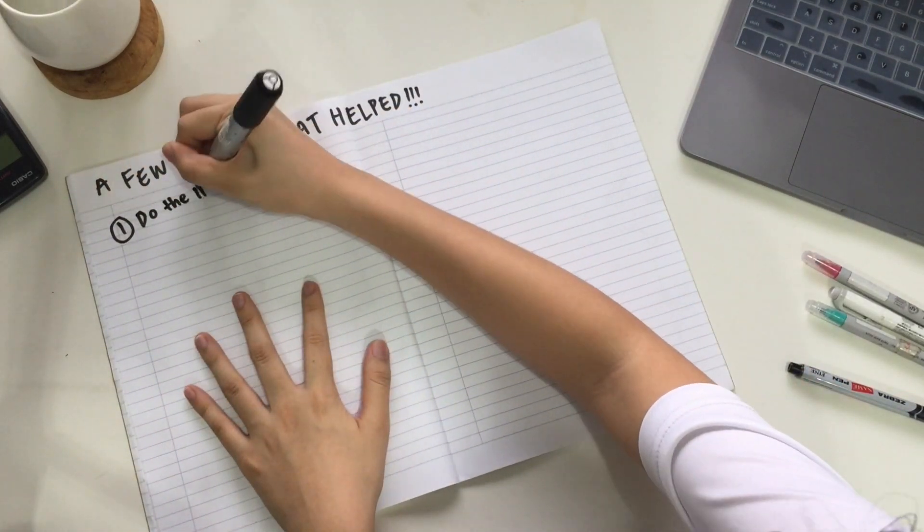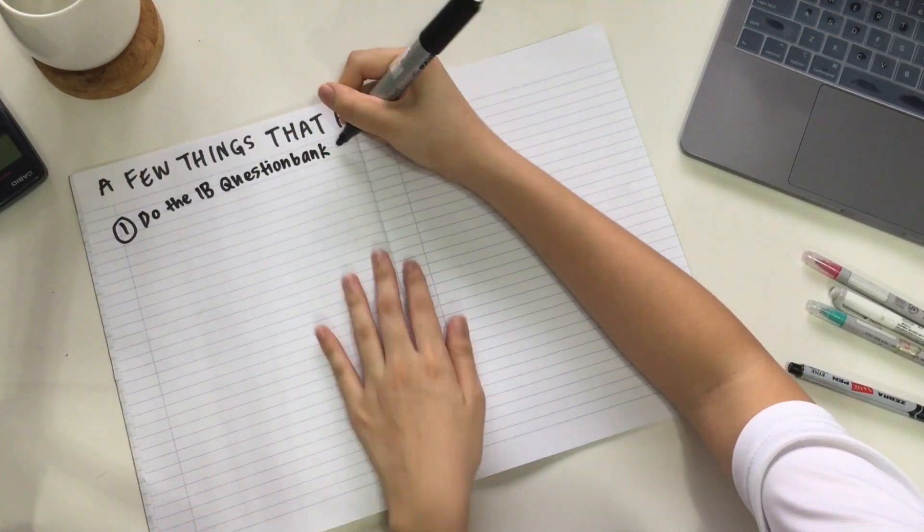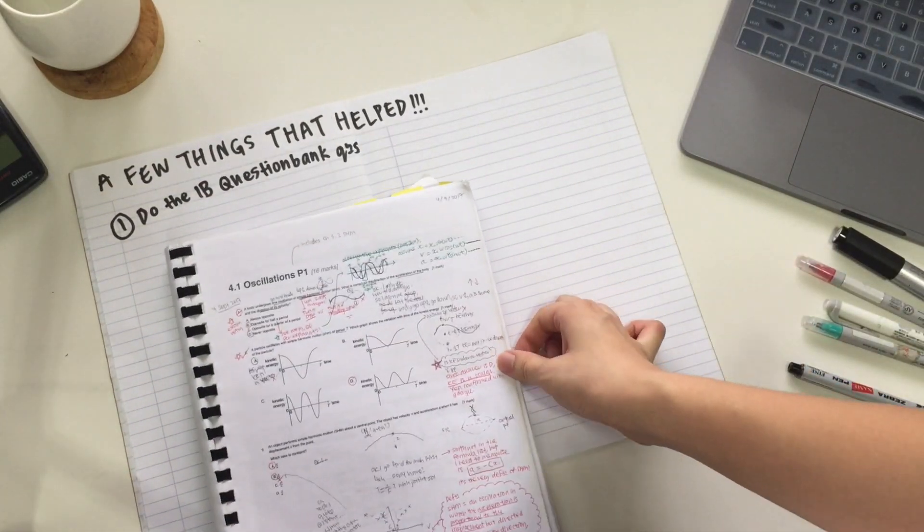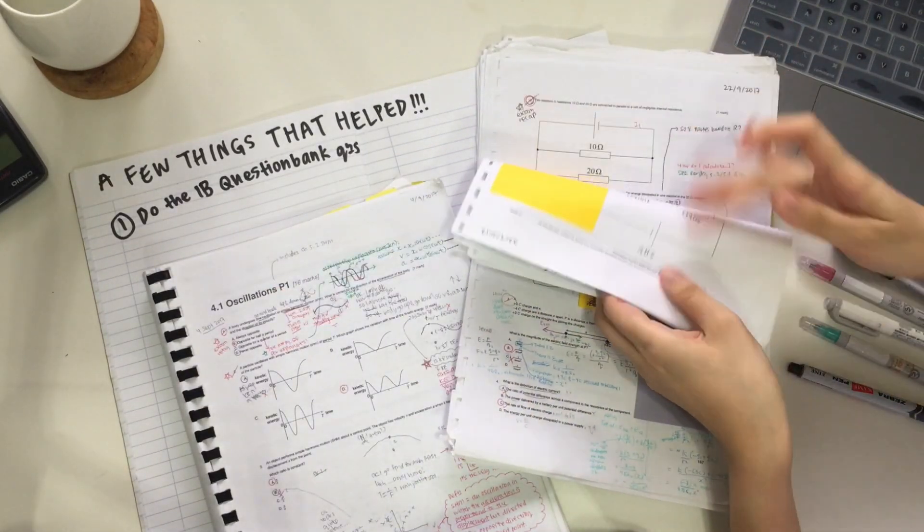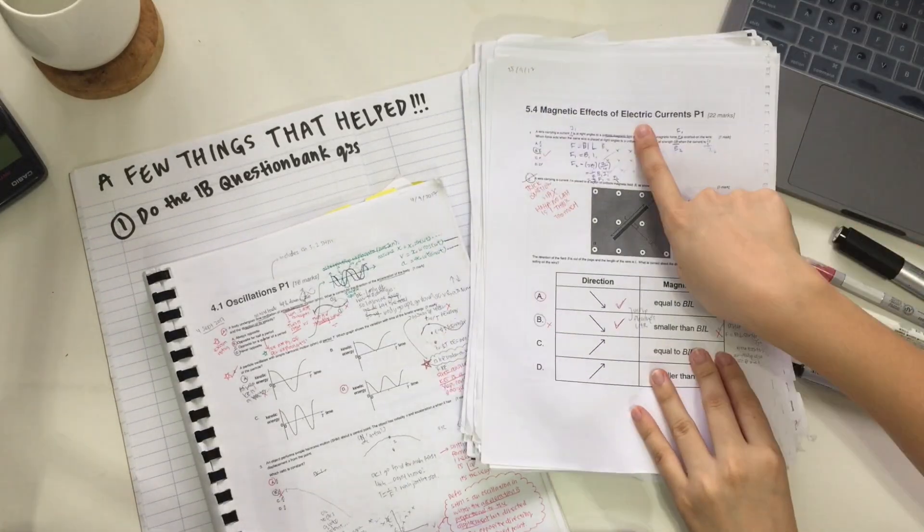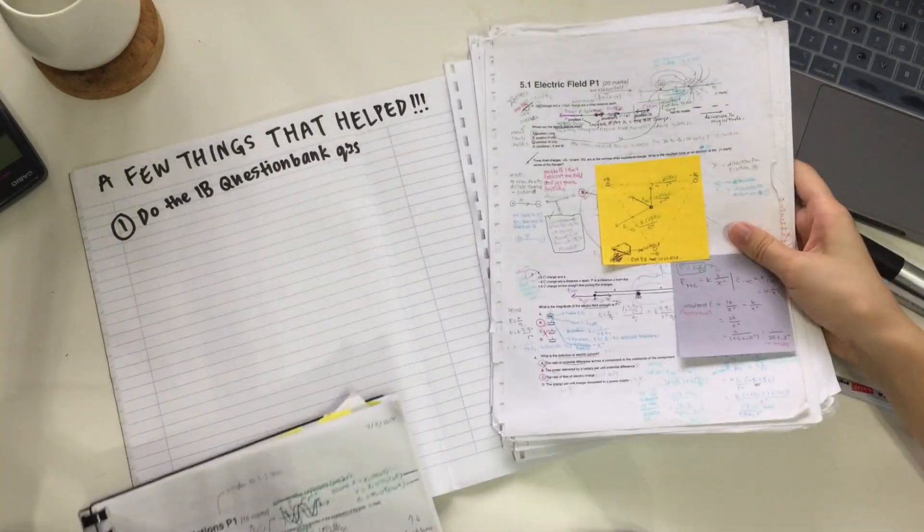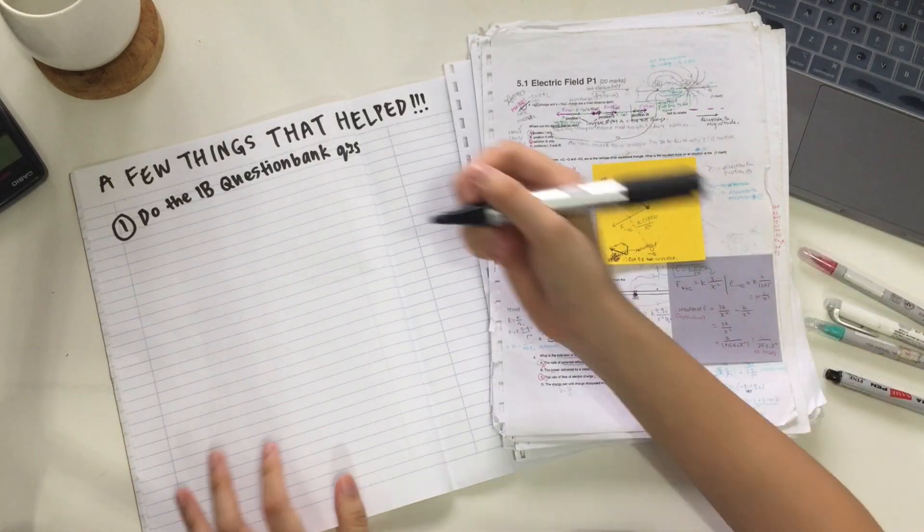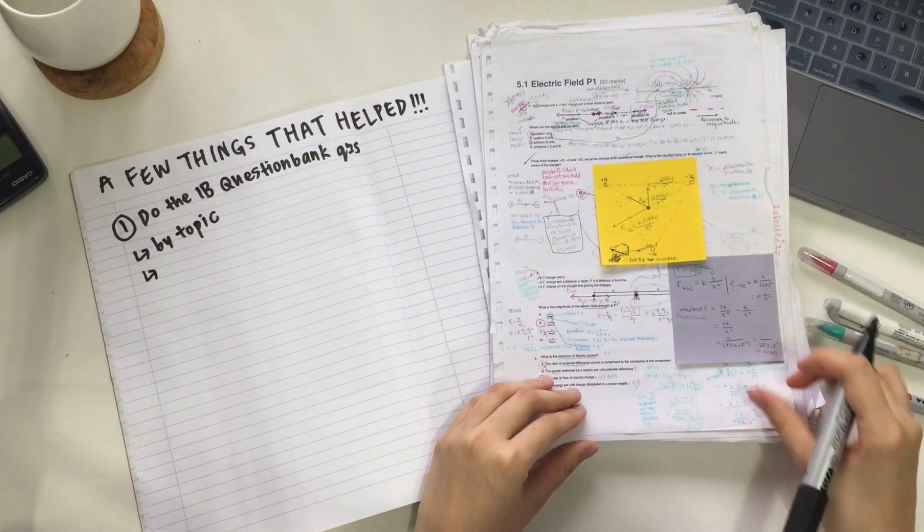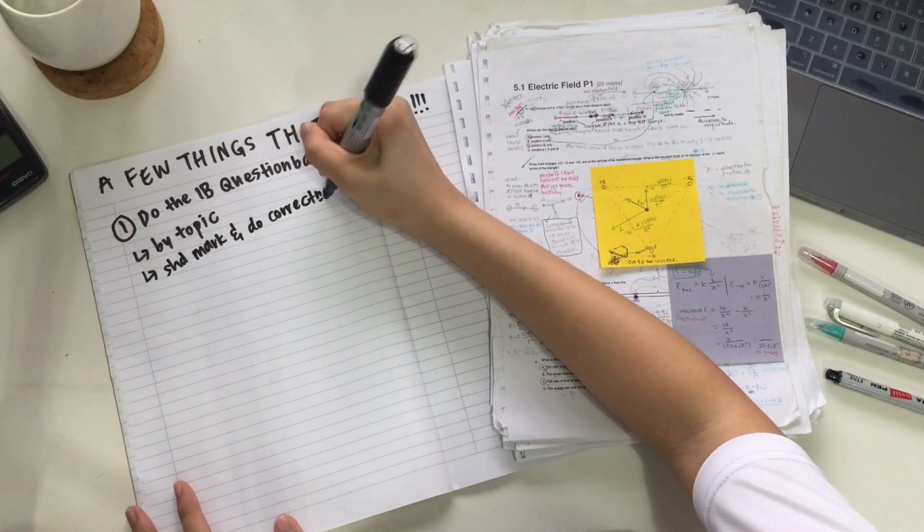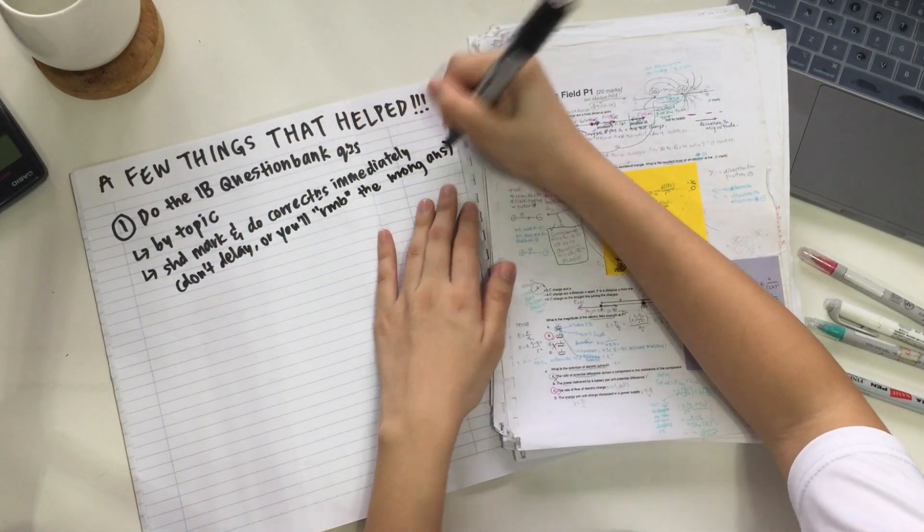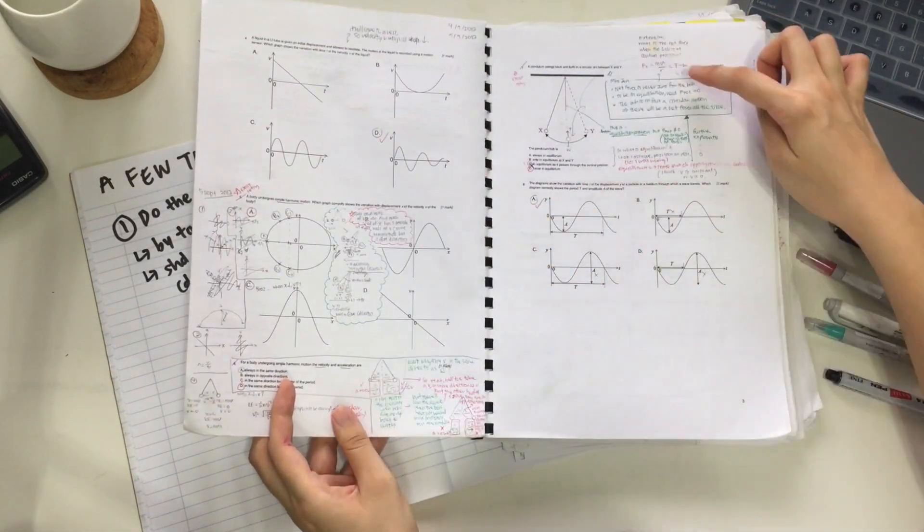The first thing that really helped me was to do the IB question bank questions. This is the official questions from the past year papers that IB has published. I think you need to get an official account to access them, but you can try asking your teacher because my school had subscribed to the account. I did them categorized by topic, and I really spent a lot of time on this. Something I learned the hard way is that you must mark right after you do the questions. If not, you will forget whether you got it right or wrong. Don't delay or you will end up remembering the wrong answer to be the so-called right one.